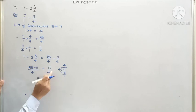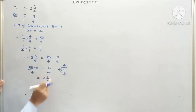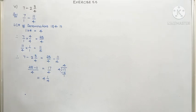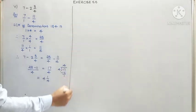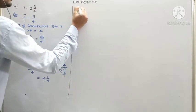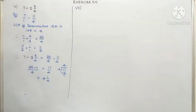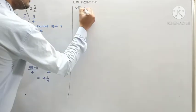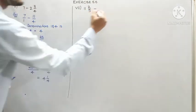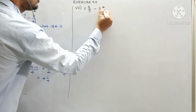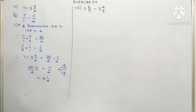If you stop at the improper fraction that is also correct, children, but get habituated to this kind of conversion as it will help you in the next classes. The 6th question is going to be your homework. Now I am going to do the 7th one. The 6th question is just like the 5th one, so the 7th one is a different model — hence I am going to do that. The question is 11 and 2 by 5 minus 3 and 4 by 5.